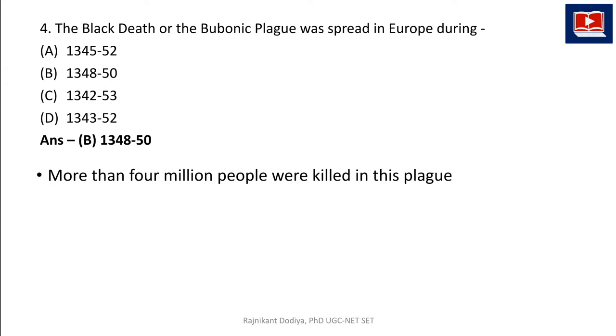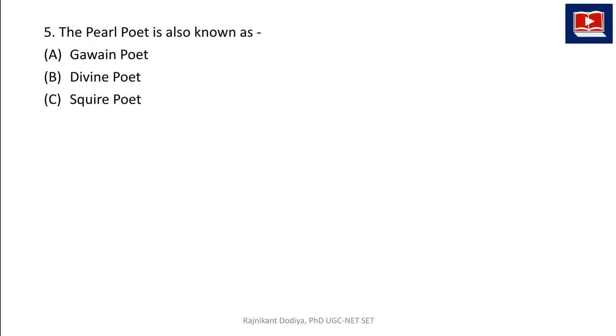The next question: the Pearl Poet is also known as — options: the Gawain Poet, the Divine Poet, the Square Poet, or the Peasant Poet. The correct answer is A: the Gawain Poet. The Gawain Poet is an unidentified poet also known as the Pearl Poet.